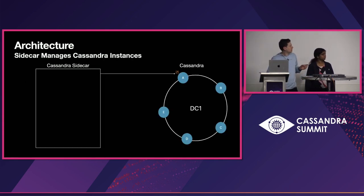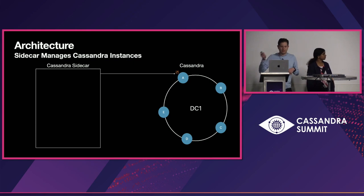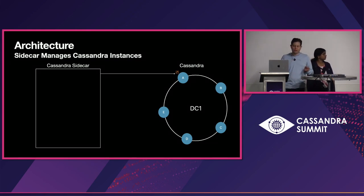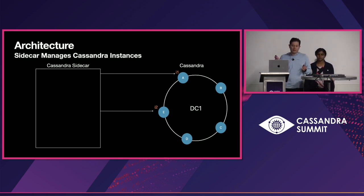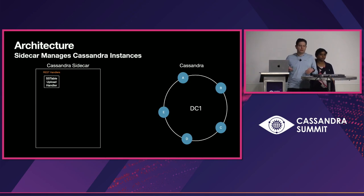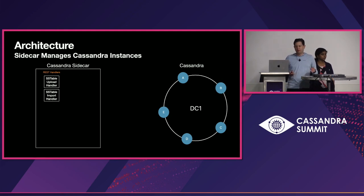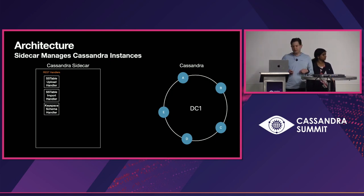On the left we have the Sidecar process, and on the right we have a Cassandra ring. We can handle one or more instances. We have adapters — for example, if we want to do an sstable upload, we have a handler for that; if we want to do an import of data or get the schema of a keyspace, we have all these handlers.